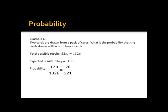Example 6. Two cards are drawn from a pack of cards. What is the probability that the cards drawn will both be honor cards? Since 2 cards will be drawn from a pack of cards, the formula for the total possible results is 52C2, which is equal to 1,326. And there are 4 honor cards in each suit, so the formula for the expected results is 16C2, which is equal to 120. The probability is 120 over 1,326, which is also equal to 20 over 221.